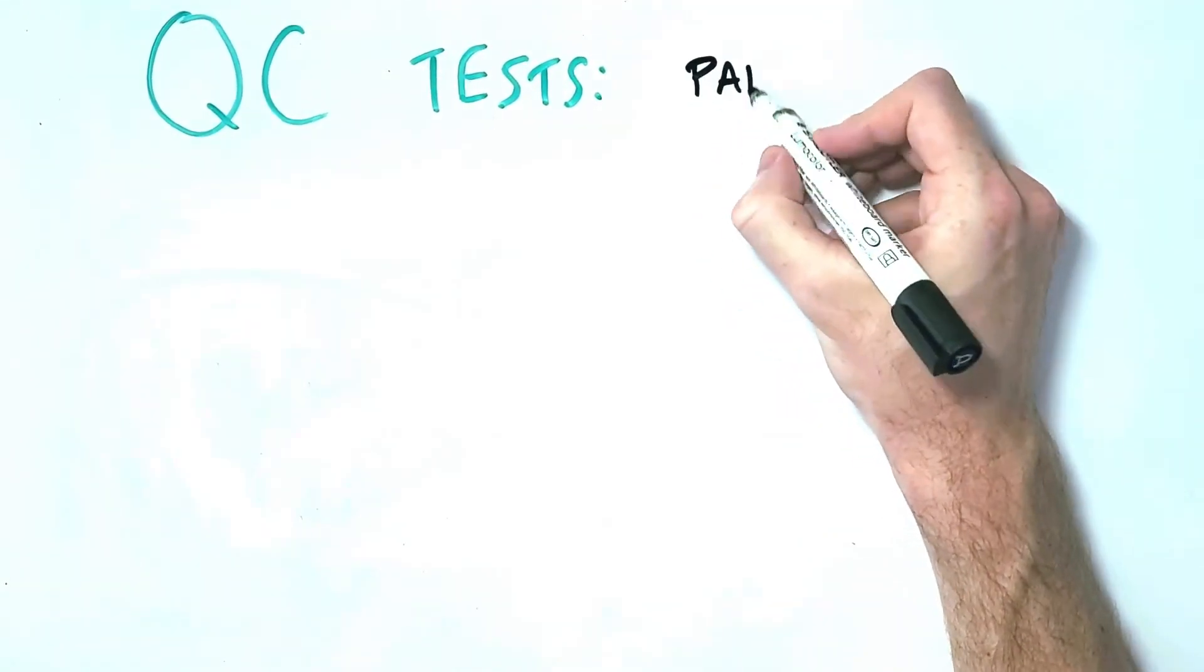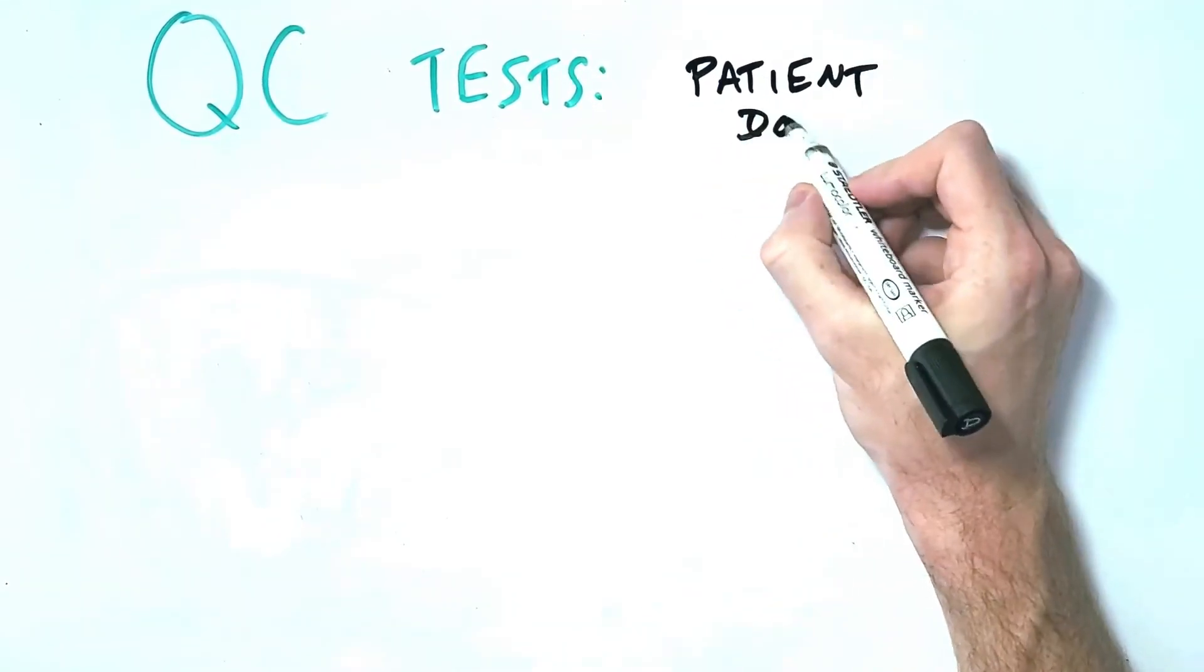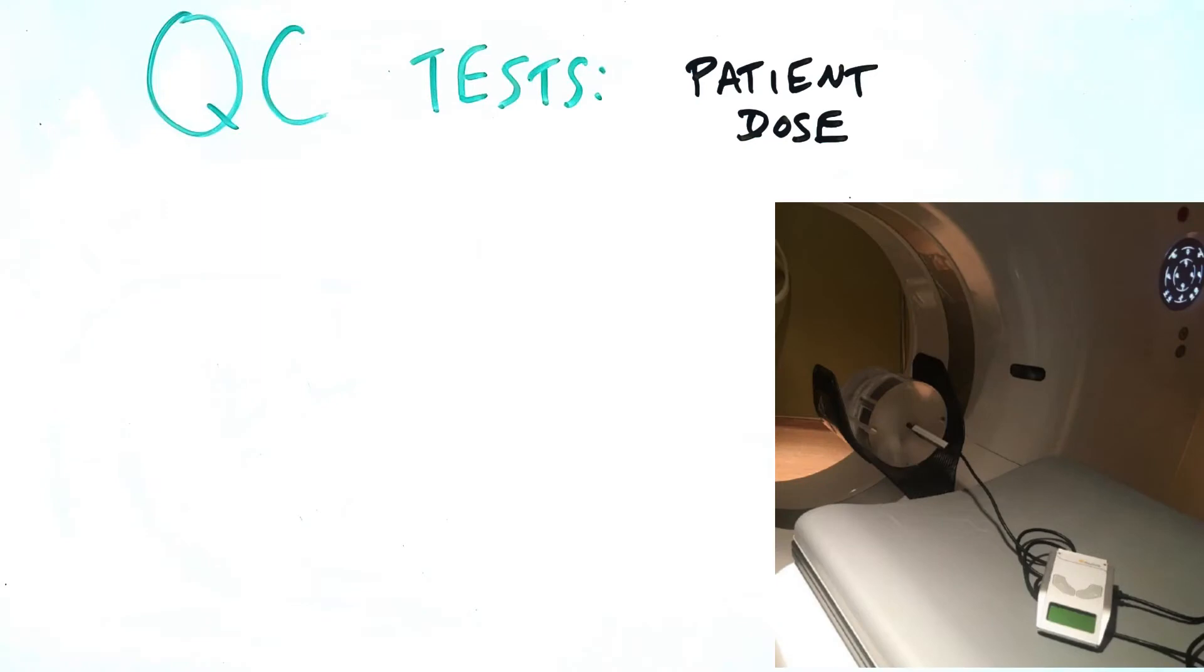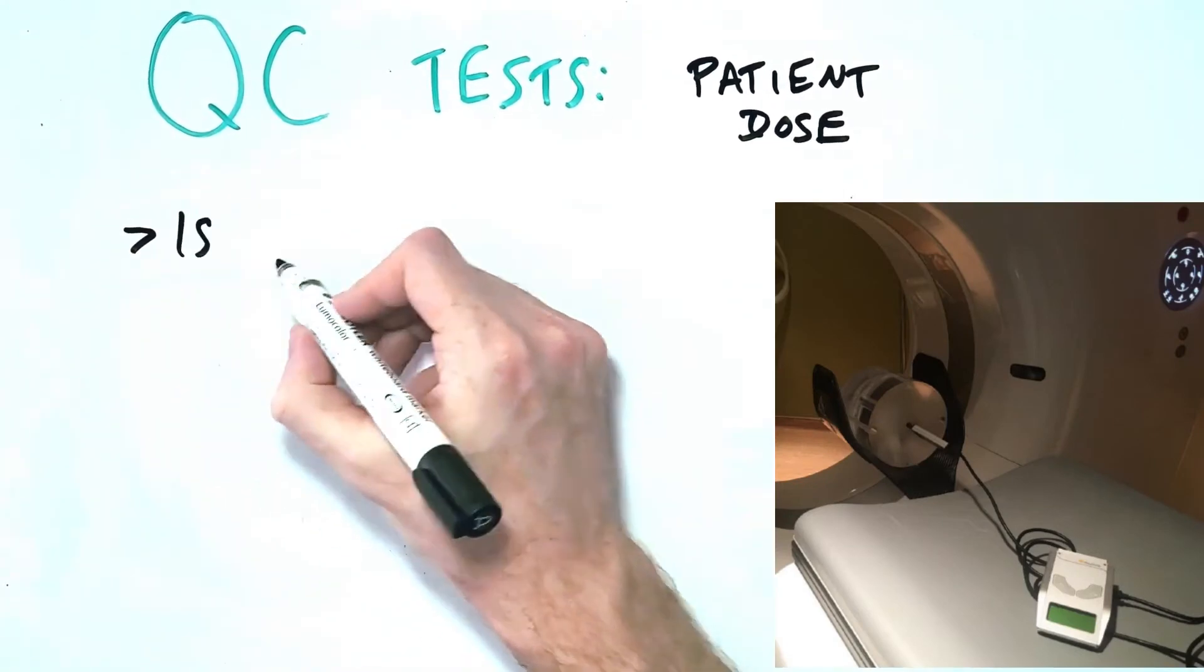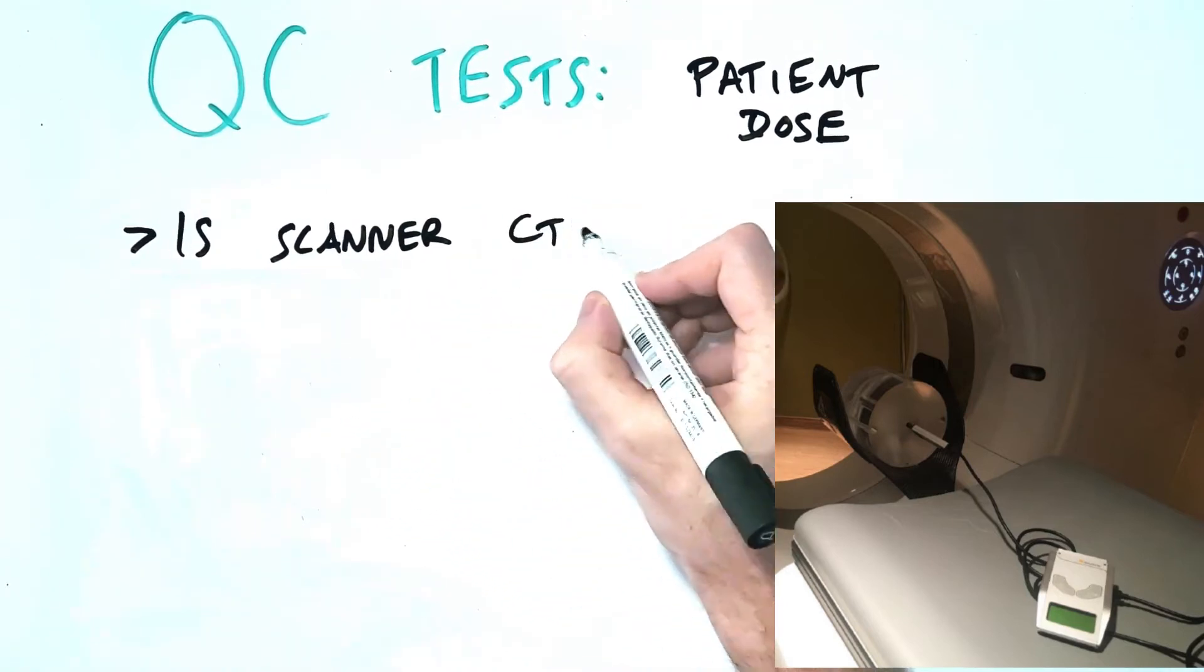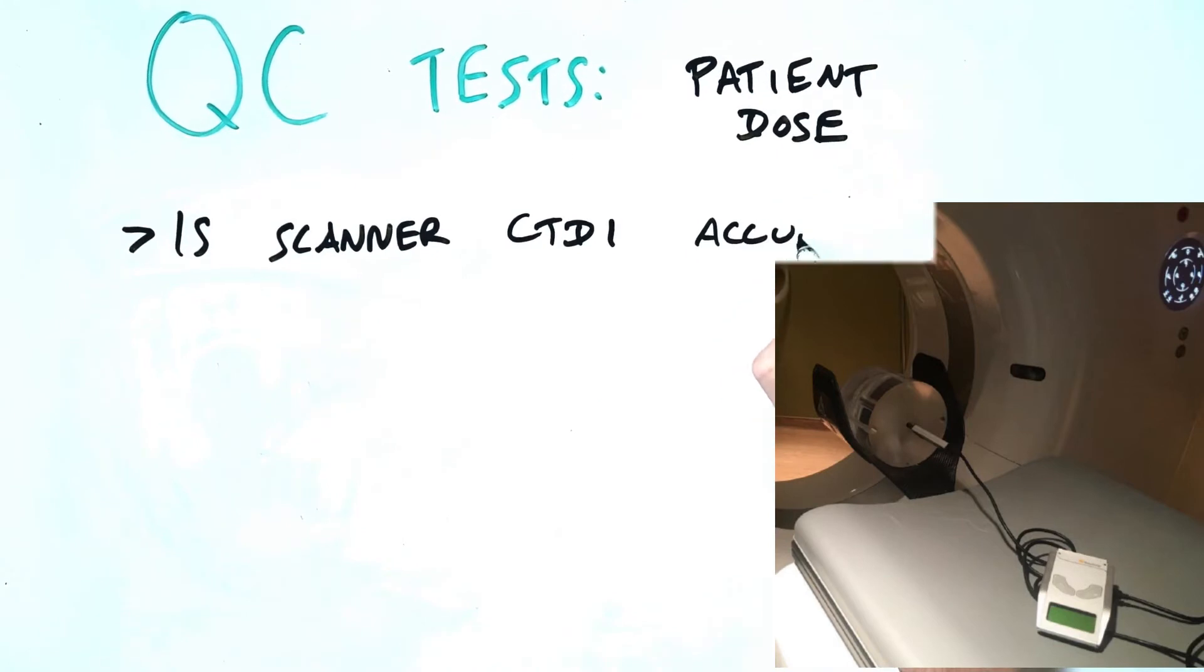Finally, the patient dose should be measured to assess whether the CT dose index displayed by the scanner is an accurate assessment of the dose being delivered to the patient. Some level of variability from the true dose is acceptable, but the primary purpose of the displayed CTDI and DLP for each scan is to compare to reference levels, to compare to other scans performed on that same scanner.